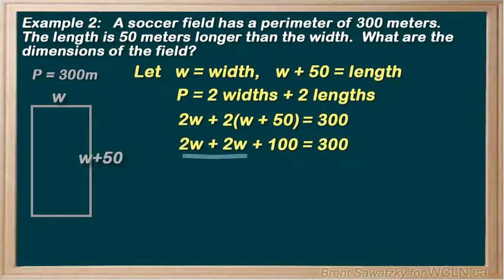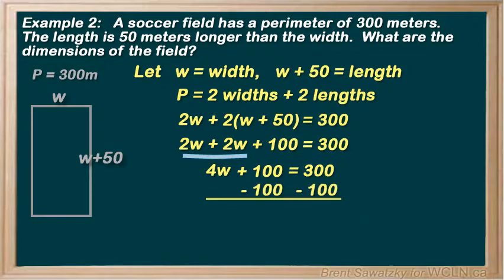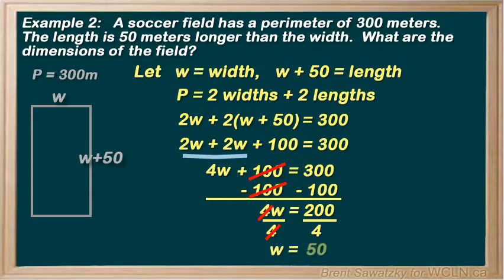We bring the 2w's together for 4w plus 100 equals 300. And it's time to isolate the variable. Let's subtract 100 from both sides, keeping it balanced, and we have 4w equals 200 now. We're multiplying by 4, so let's divide by 4, and 200 divided by 4 is 50. So w equals 50.